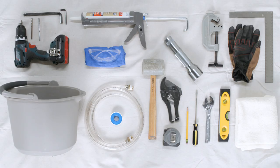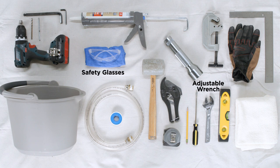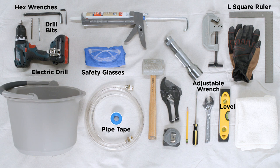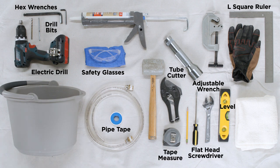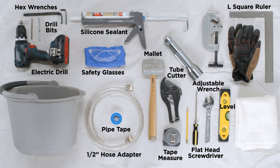There are some basic tools and supplies you will need for installation. These include an adjustable wrench, safety glasses, hex wrenches, pipe tape, electric drill, level, L-square ruler, flathead screwdriver, tape measure, tube cutter, silicone sealant, mallet, half-inch NPSM male threaded hose adapters with compatible threaded hoses, and a pencil for marking.